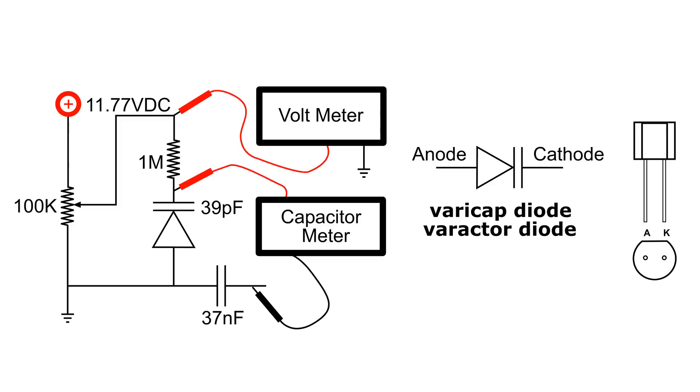The reason for the 37 nanofarad capacitor is just to isolate the capacitance meter from voltage.